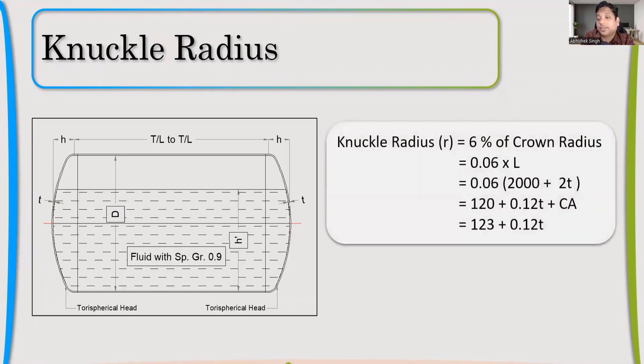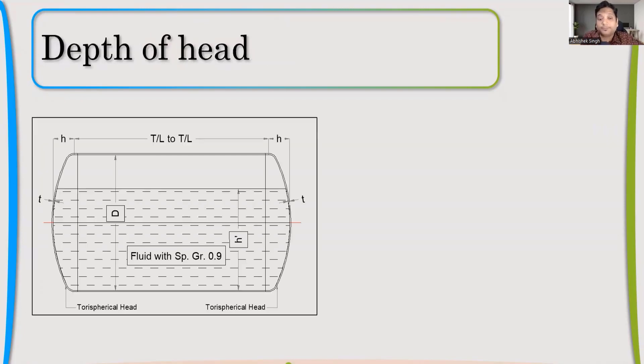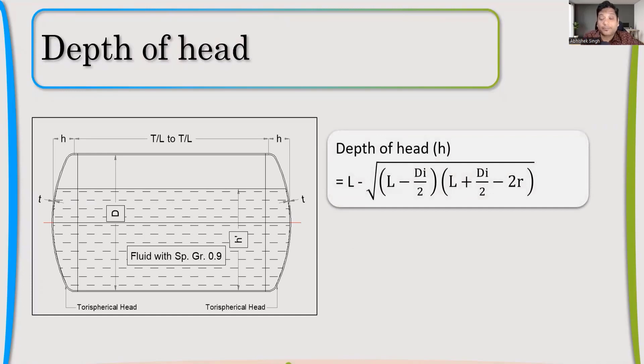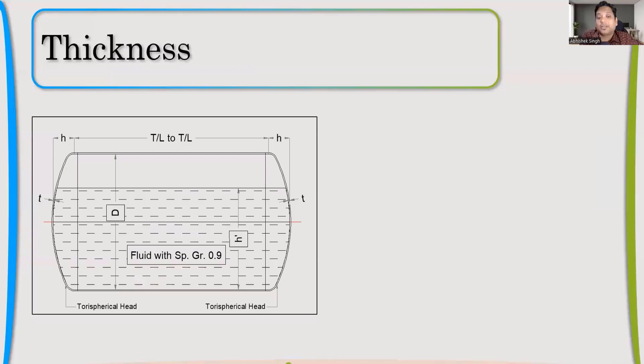Knuckle is 6% of the crown. We have calculated crown, so 6% of that is the knuckle. Now, depth of the T-shen. For torispherical, this is the formula which we use for depth calculation. For 2 to 2 it's easy, it's D by 4, but for torispherical, this is the formula for depth calculation.